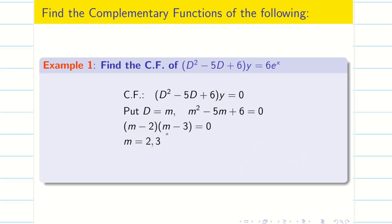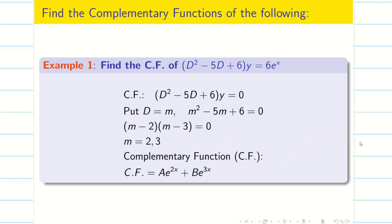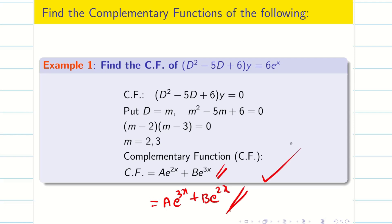Some students may write the roots as 3 and 2 instead of 2 and 3. Then the CF would be a·e^(3x) + b·e^(2x). Both are correct — either ordering of the roots gives an equivalent complementary function.